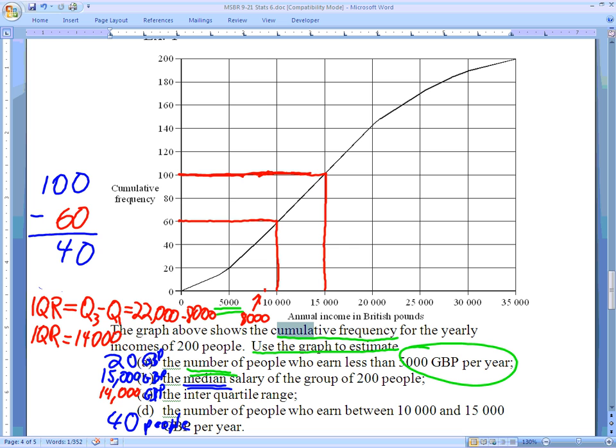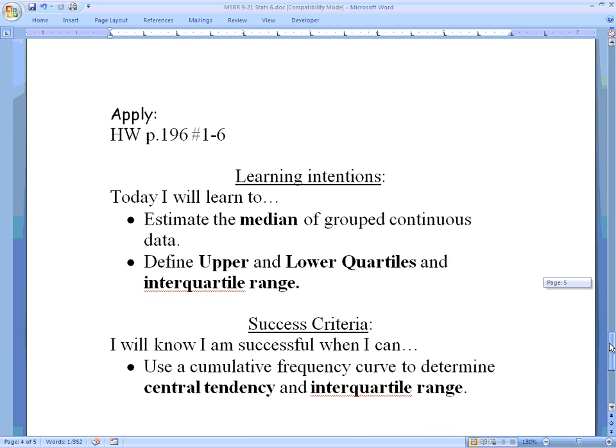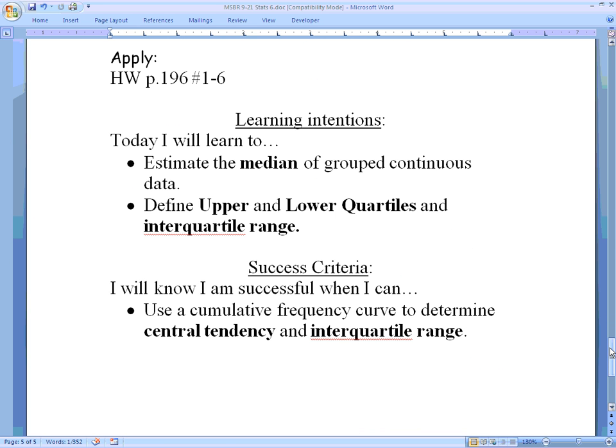All right, so that's a little introduction to cumulative frequencies, quartiles, interquartile range, and median of continuous grouped data. The book has some more problems with this. Most of them, they've already drawn the graph for you. We will practice doing a little bit of drawing the graphs on our own, but we'll see that on page 196, numbers 1 through 6.